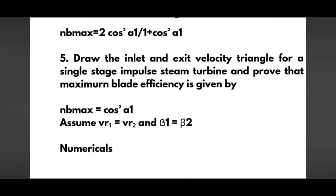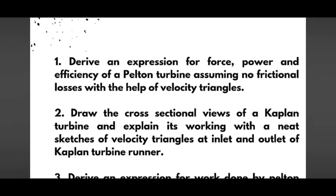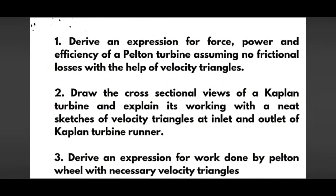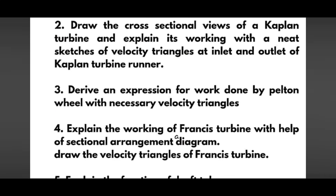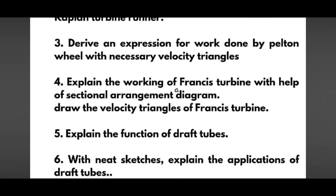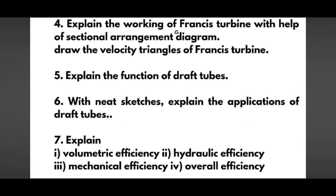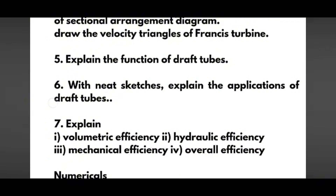You can also go through numericals if convenient. Next we have Module 4: derive an expression for force, power, and efficiency of a Pelton turbine assuming no frictional losses, with the help of velocity triangles. Also, draw the cross-sectional views of a Pelton turbine and explain its working with neat sketches of velocity triangles at inlet and outlet of the Pelton turbine runner, and derive an expression for work done by the Pelton wheel — this is again a super important question. Explain the working of a Francis turbine with a sectional arrangement diagram, draw the velocity triangles of the Francis turbine, and explain the function of draft tubes with neat sketches.